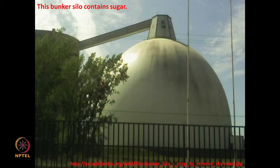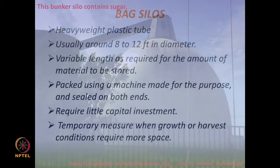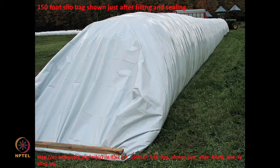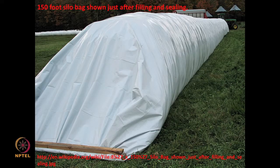This is a bunker silo used to store sugar. A bag silo on the other hand is essentially just a heavy-weight plastic tube, 8 to 12 feet in diameter and variable length. It is custom manufactured, sealed on both ends, does not require much capital investment, and is a temporary measure. It is the same concept as a plastic bag used to store materials, just on a much larger scale. These are called bag silos.